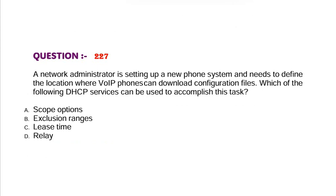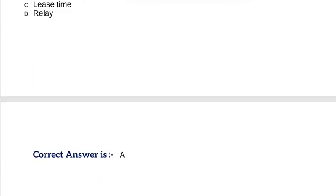Question: A network administrator is setting up a new phone system and needs to define the location where VoIP phones can download configuration files. Which of the following DHCP services can be used to accomplish this task? Option A, scope options. Option B, exclusion ranges. Option C, lease time. Option D, relay. Correct answer is Option A.